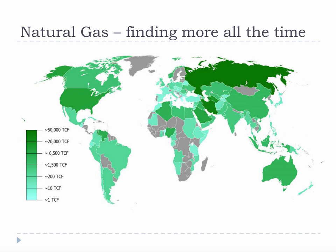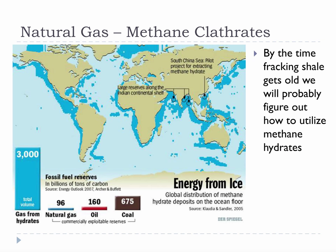This is a map of the current estimated gas reserves in the world. Gas is formed far more commonly than oil, and it is also formed during coal formation, so there is a lot of gas out there. I'm not sure how long fracking reserves will last, but I suspect that by the time fracking shale gets old, we will probably figure out how to utilize methane hydrates — a form of natural gas trapped in ice crystals found at the bottom of the ocean near all of the continental shelves on Earth. The amount of carbon available in methane clathrates is enormous: 3,000 gigatons is a lot of carbon.